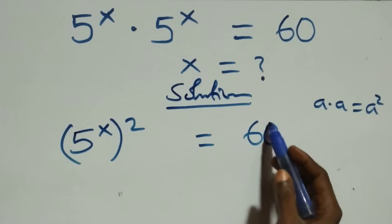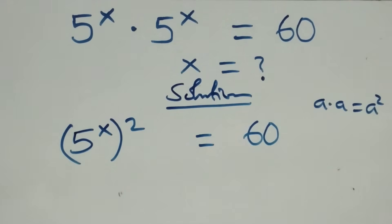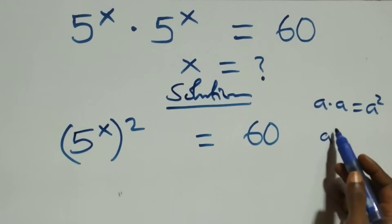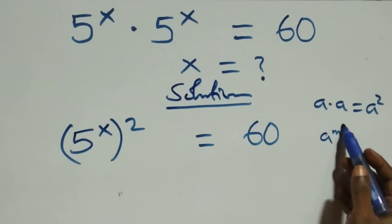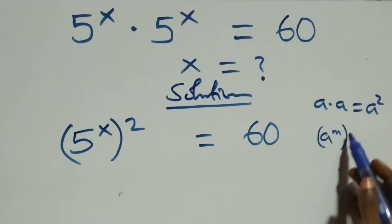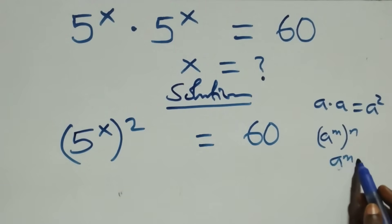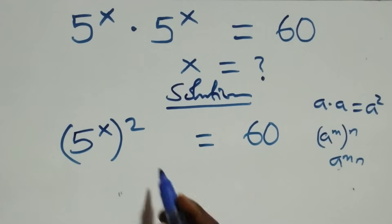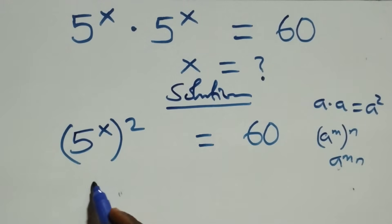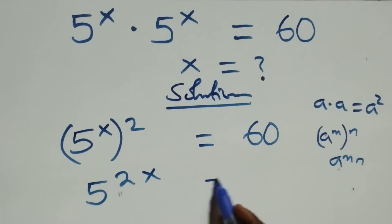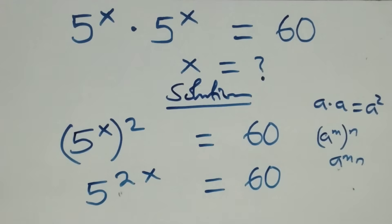From here, the next step follows when we have a raised to power m, raised to power n, which is the same thing as a raised to power m·n. That is, the powers multiply, and this becomes 5 raised to the power 2x equals 60.